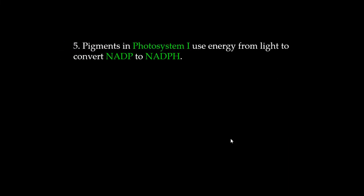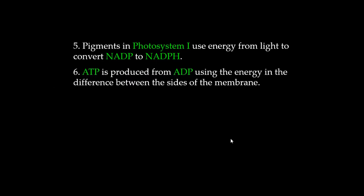Pigments in Photosystem 1 use energy from light to convert NADP to NADPH. ATP is produced from ADP using the energy in the difference between the sides of the membrane. ATP synthase is the enzyme that converts ADP to ATP.